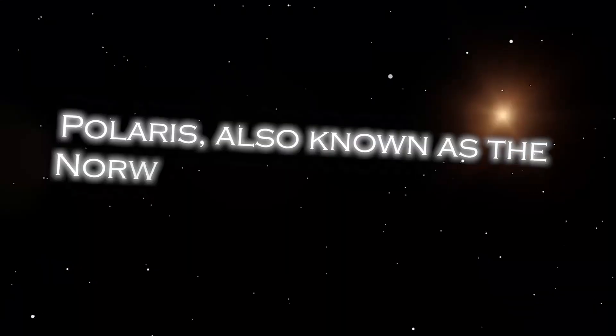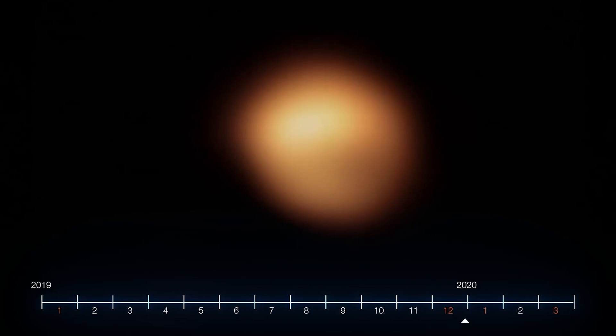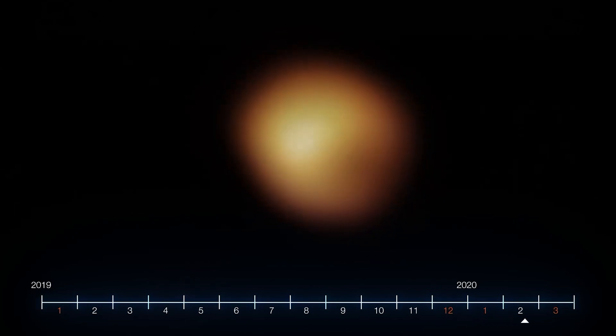Polaris, also known as the North Star, occupies a special position in the sky because of its proximity to the celestial North Pole. It is almost directly over Earth's North Pole, which gives the illusion that it remains static in the northern sky.